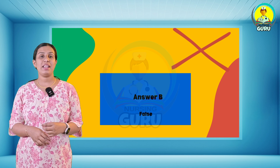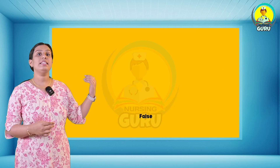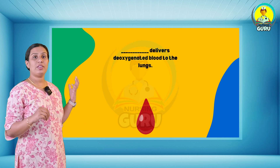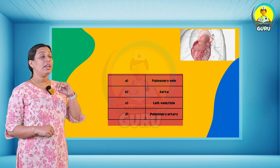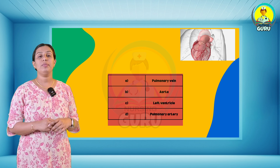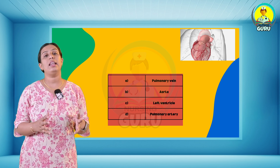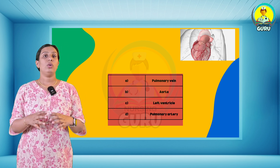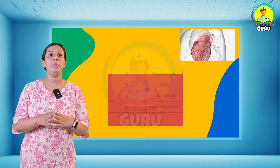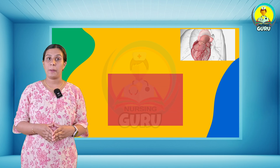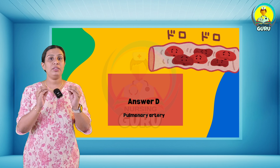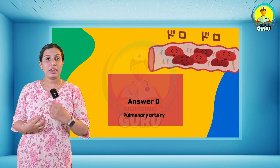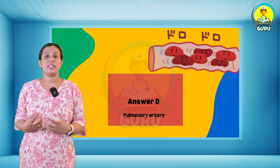Fourteenth question: what delivers deoxygenated blood to the lungs? Four options: pulmonary vein, aorta, left ventricle, and pulmonary artery. Without any doubt, the right answer is pulmonary artery. Your pulmonary arteries carry blood from your heart to the lungs — they are the only arteries in your body that carry deoxygenated blood.